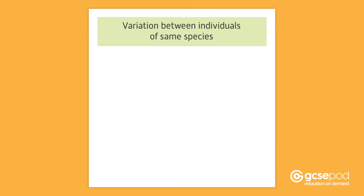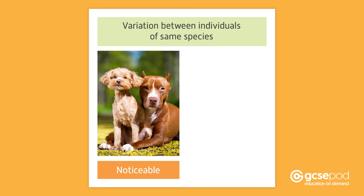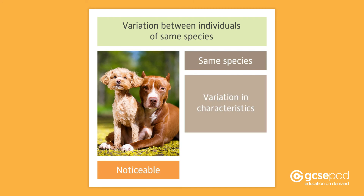There is variation, or difference, between individuals of the same species. In some species, the variation is very noticeable. For example, dogs all belong to the same species, but they show great variation in characteristics like size and fur colour.